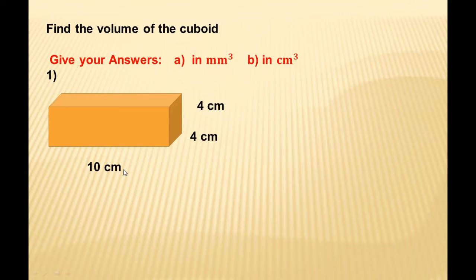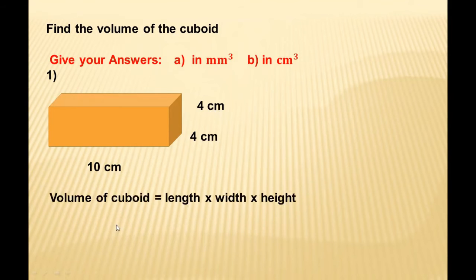The formula for volume of a cuboid is: length × width × height. That means all three measurements should be multiplied with each other.